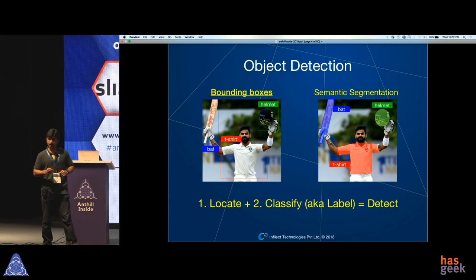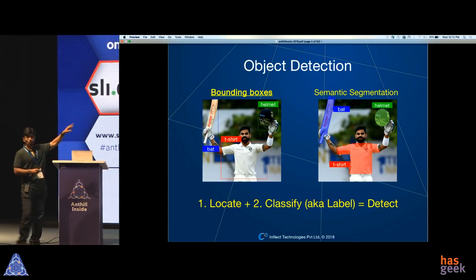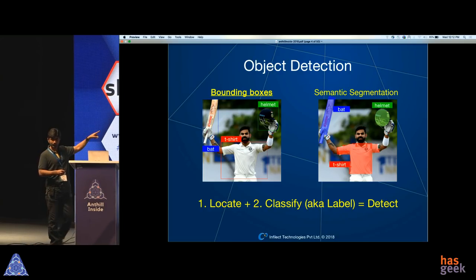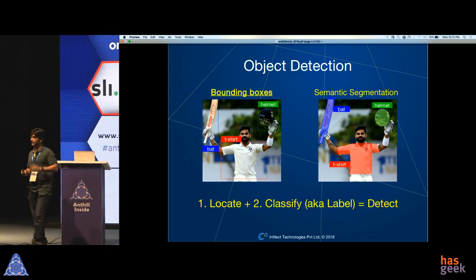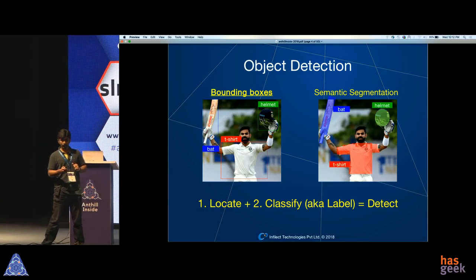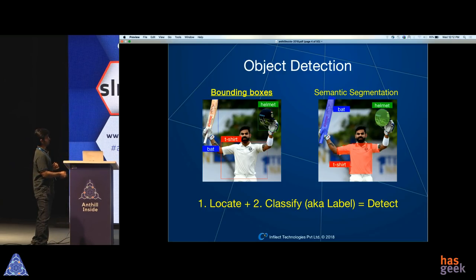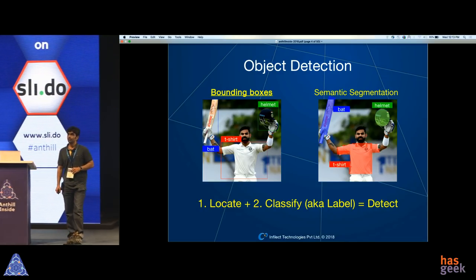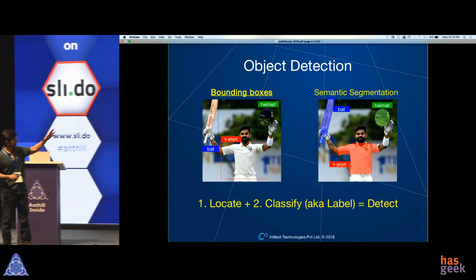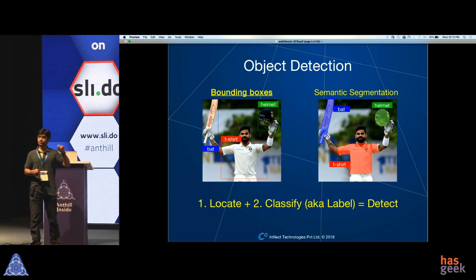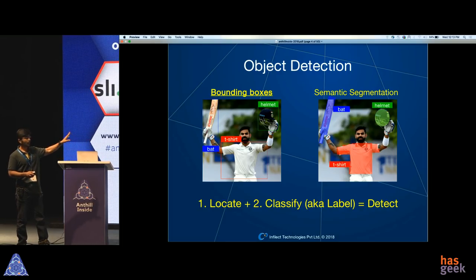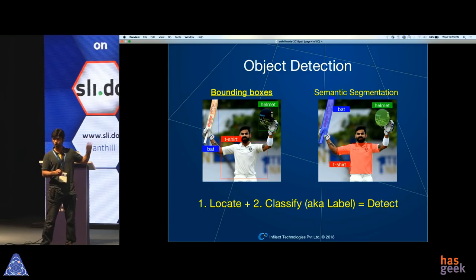Object detection is a step further than image classification. All the equipment we saw on the previous slide are now part of a single picture. If we have to detect them, we not only have to locate where they exist inside the image, but we also have to classify them. This can primarily be done in two ways: either learn to do bounding boxes on the objects, or learn to produce segmentation masks. In segmentation, you have to do prediction for every single pixel of the image. For most of my talk, I'll focus on methods which put bounding boxes on objects inside a picture.